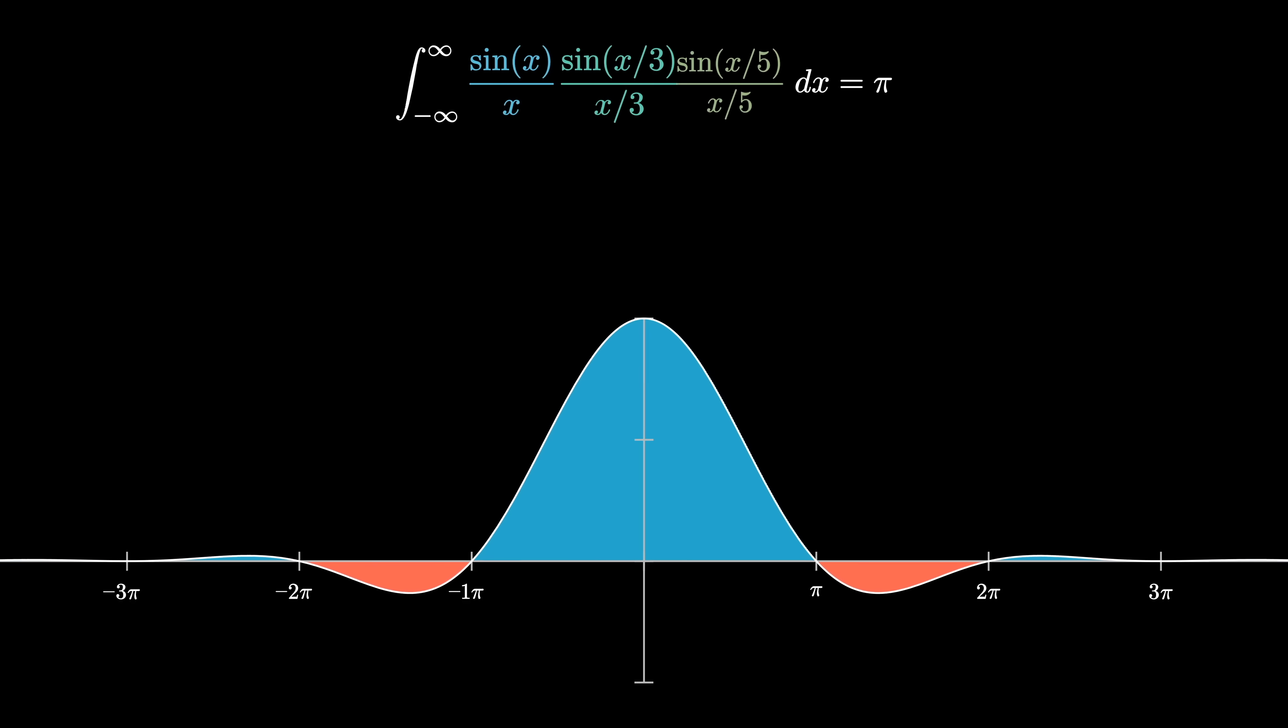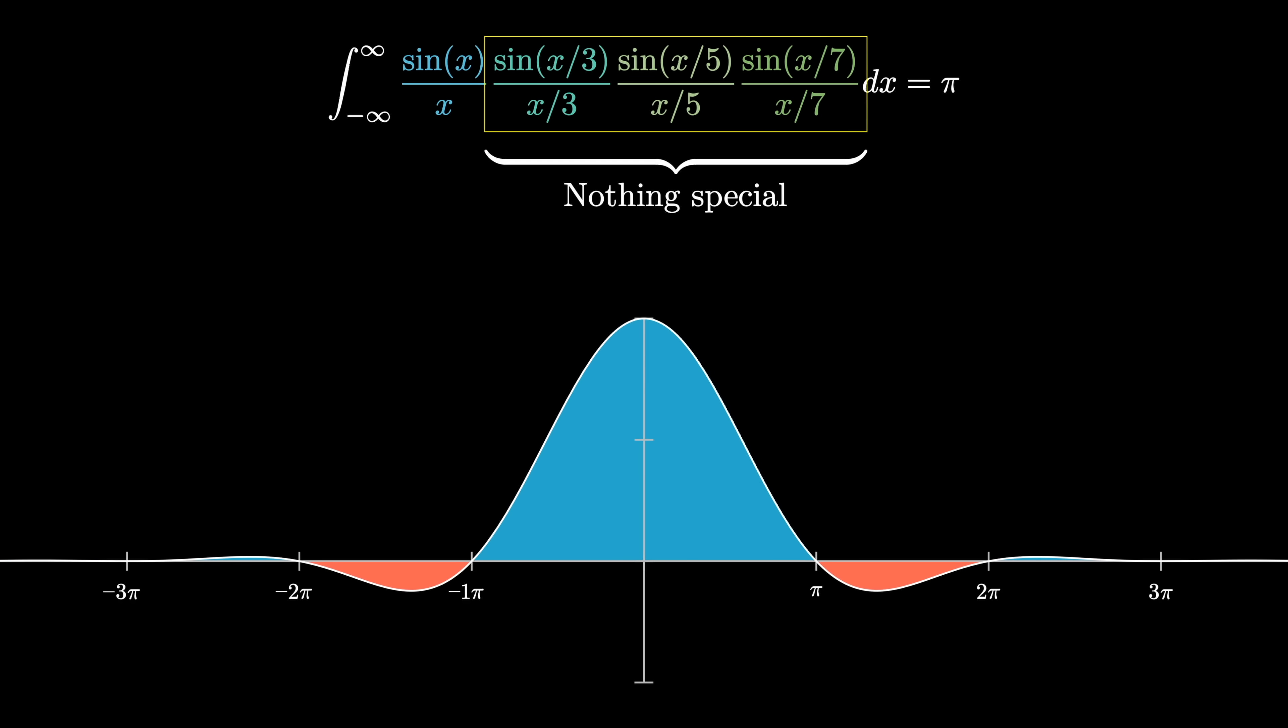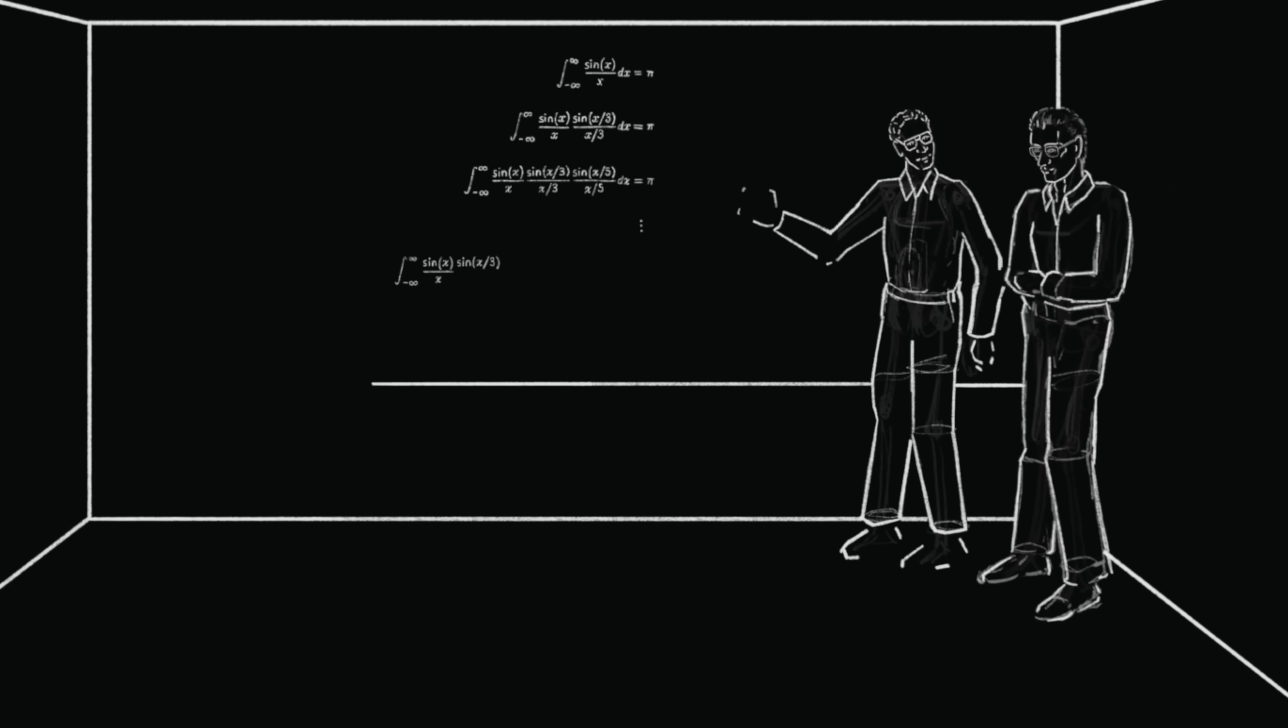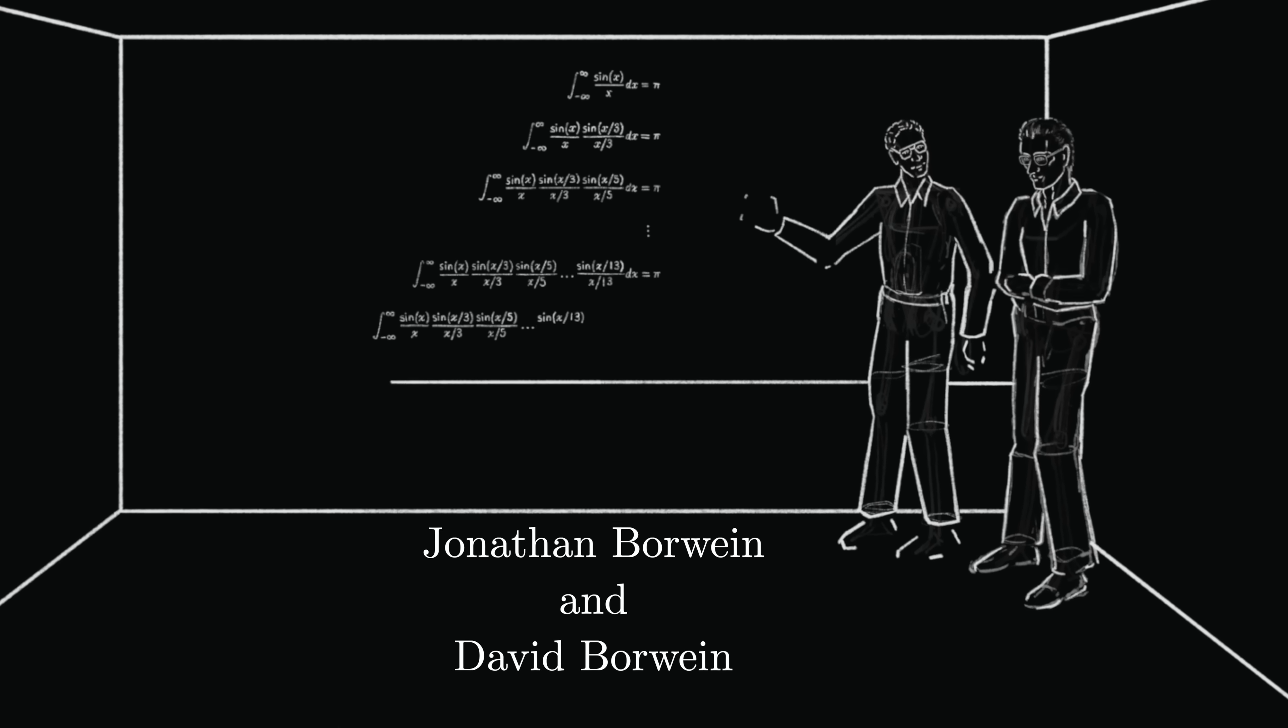And, by the way, I should emphasize that there is nothing special about these reciprocals of odd numbers, 1 3rd, 1 5th, 1 7th. That just happens to be the sequence of values highlighted by the Borweins in their paper that made the sequence mildly famous in nerd circles.